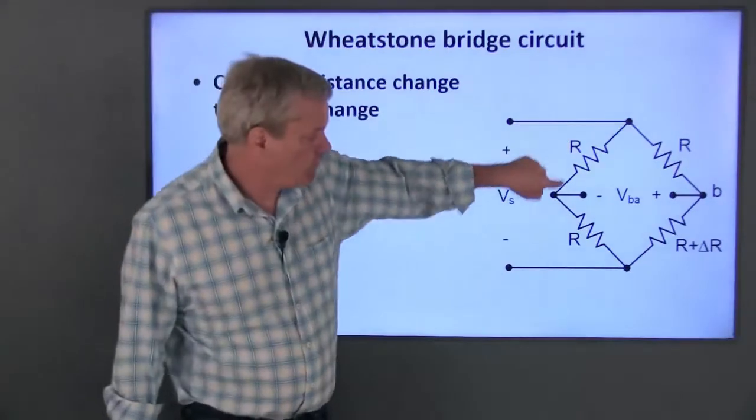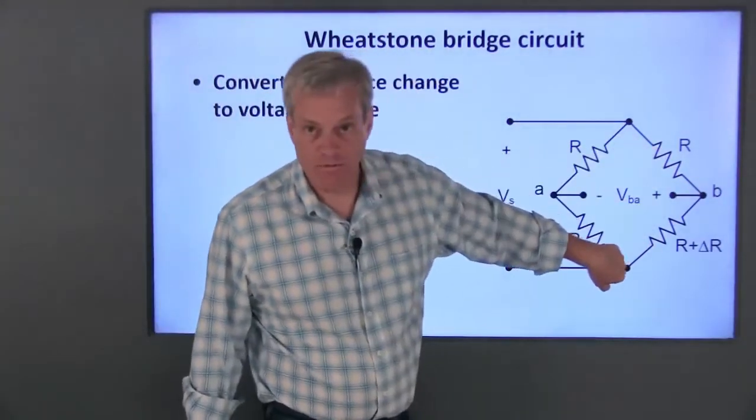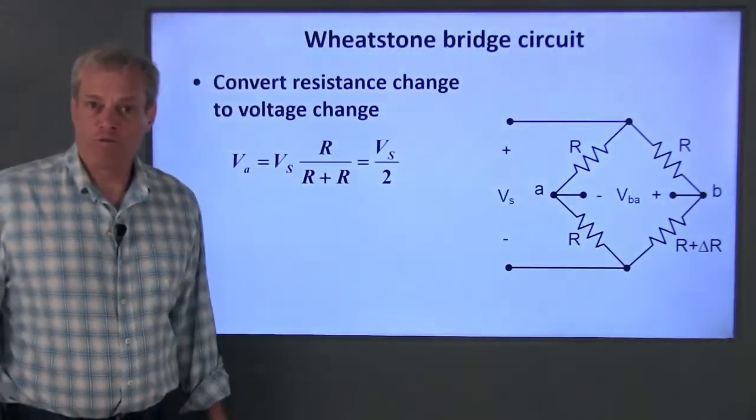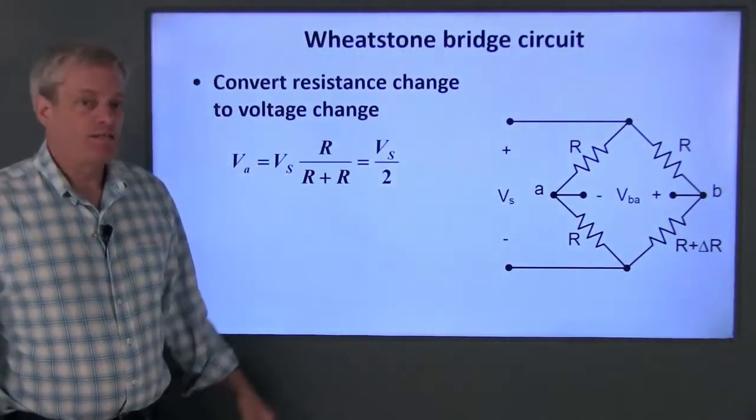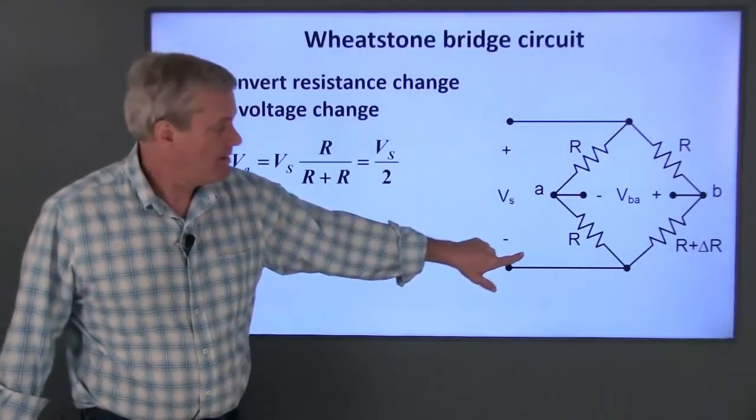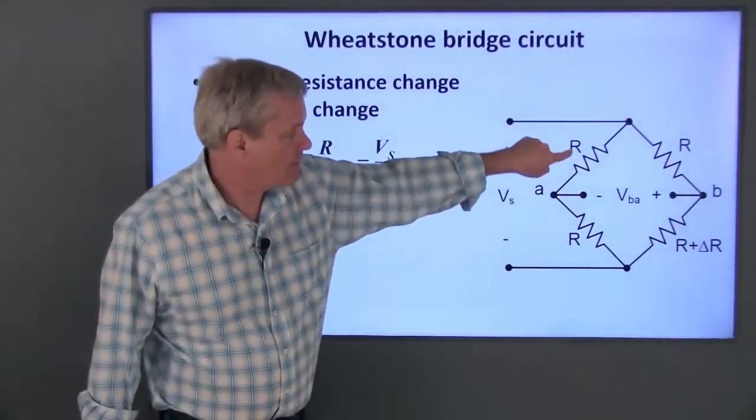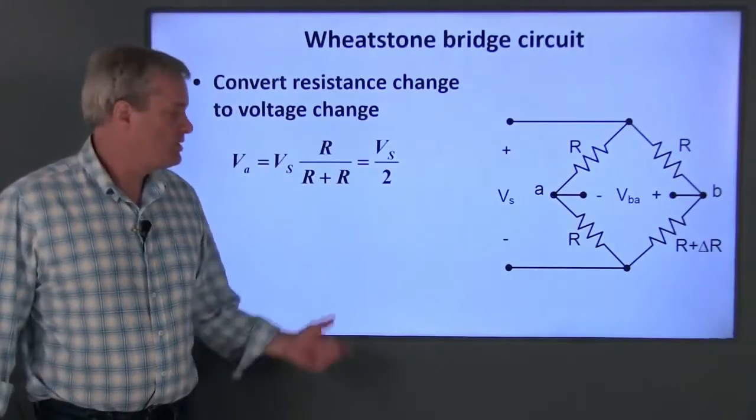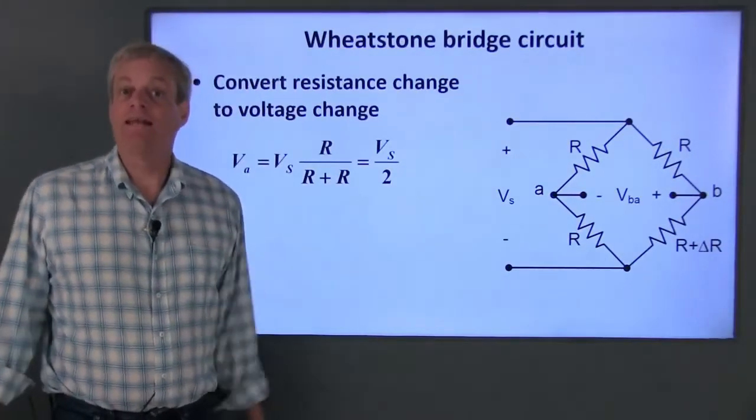This circuit consists of two voltage dividers that are in parallel with each other. The voltage V sub A can be calculated from a voltage divider formula. V sub A is the total voltage V sub S times this resistance over the sum of these two resistances. Since those resistors are the same, this is just V sub S over 2 and it never changes.